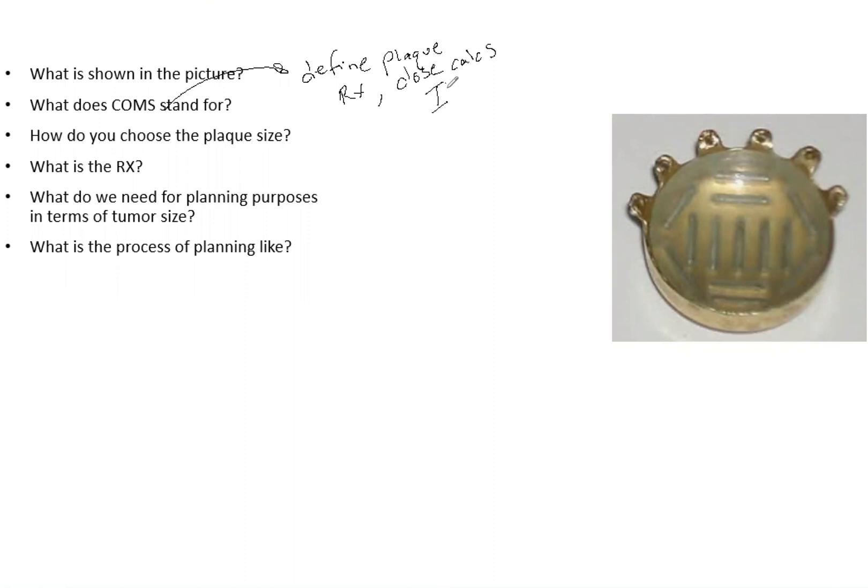They're very important in this type of work. Now, plaque sizes are always in even numbers - that's just how they are. For example, 12 millimeter, 14 millimeter. What you want to do is take the largest dimension of the tumor and add two millimeters to each side.